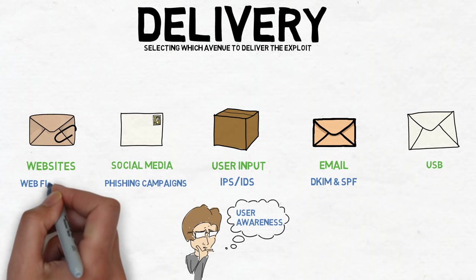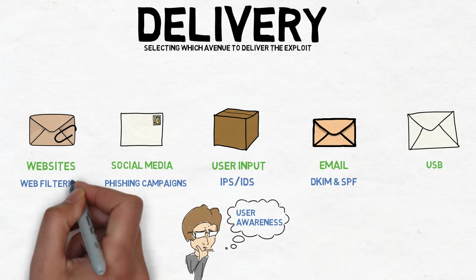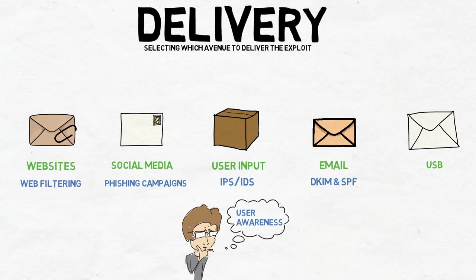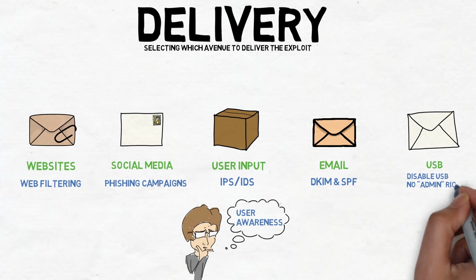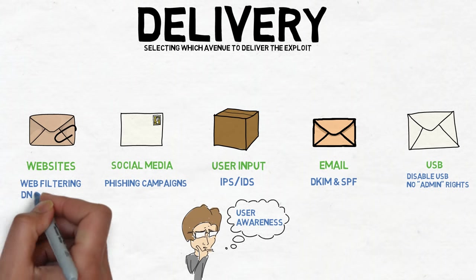Web filtering can prevent a user from accessing questionable or known bad websites. Disabling USBs and not giving users admin rights also prevents a big portion of delivery mechanisms that malware typically use.